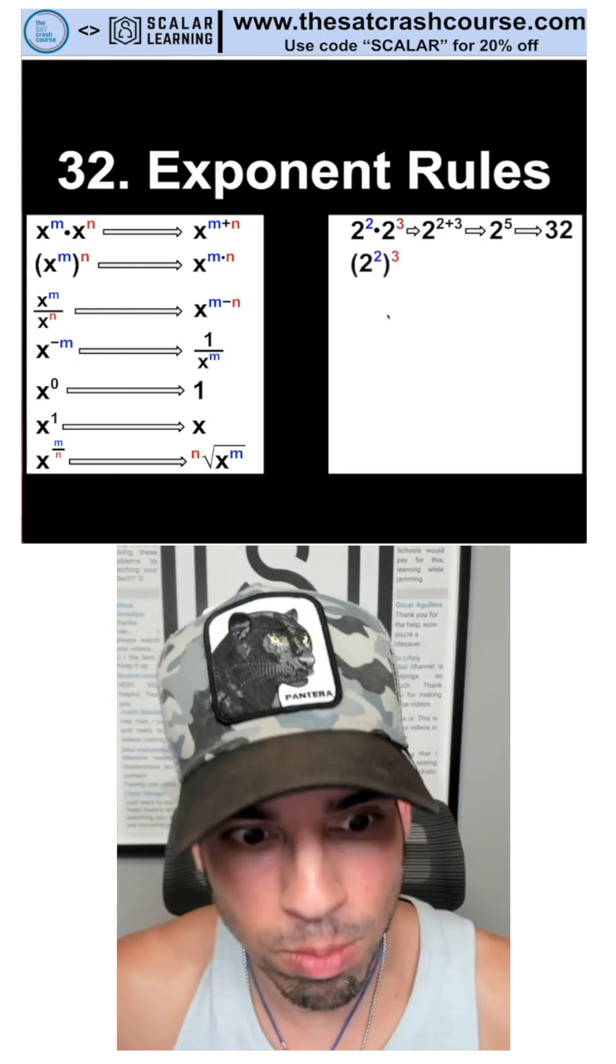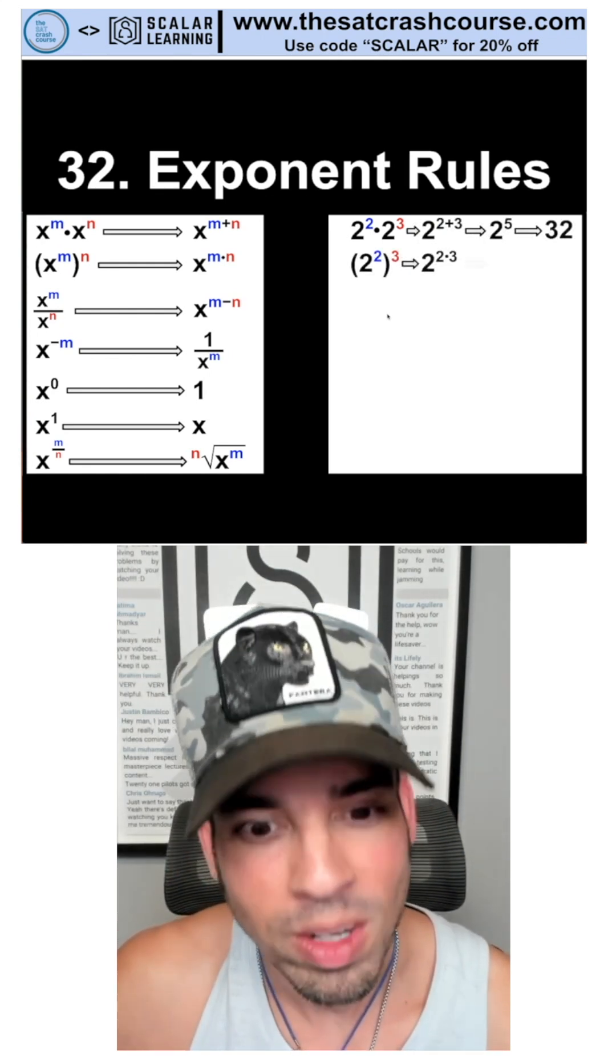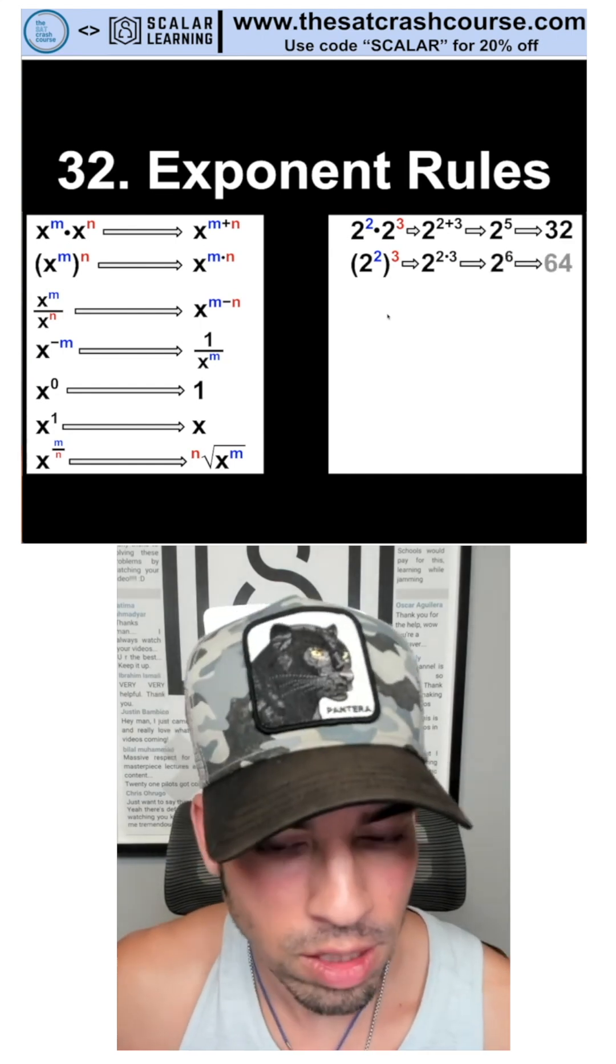Here's another example, same numbers, but now we're gonna multiply those exponents and we get two to the sixth, which is 64.